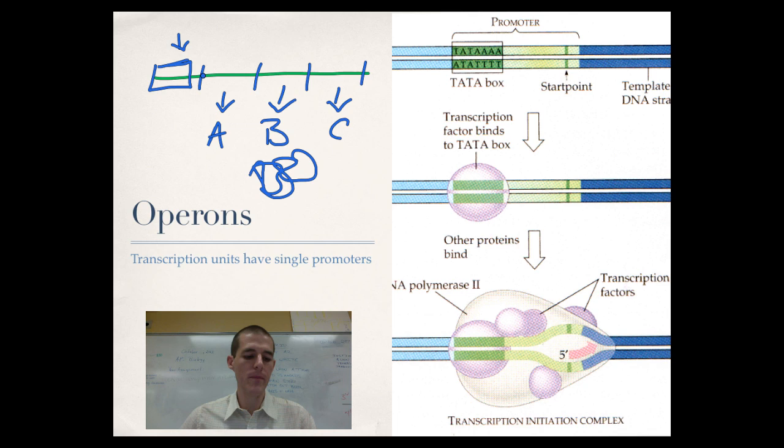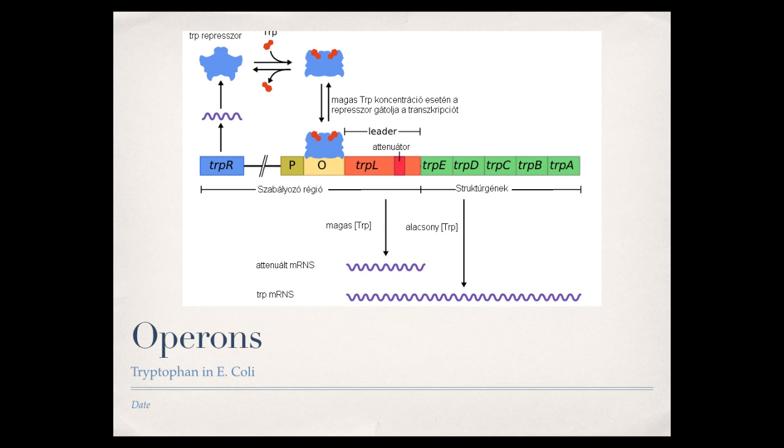All right. The best way to talk about the idea of an operon is simply by example. There are going to be two examples we're going to talk about today. One is tryptophan. The other one is lactose. Both of these are in E. coli. So the first one we're going to talk about is the tryptophan operon. An operon is essentially the set of enzymes and materials that work together to control whether a gene is transcribed or not.